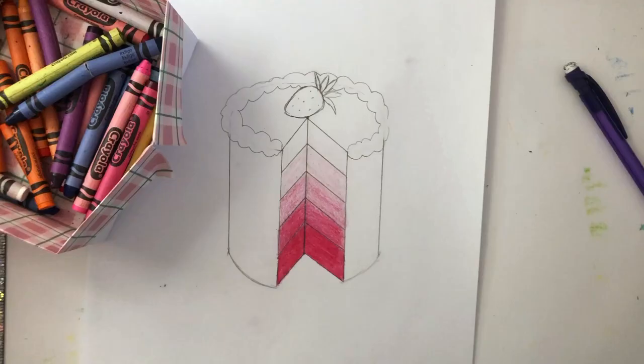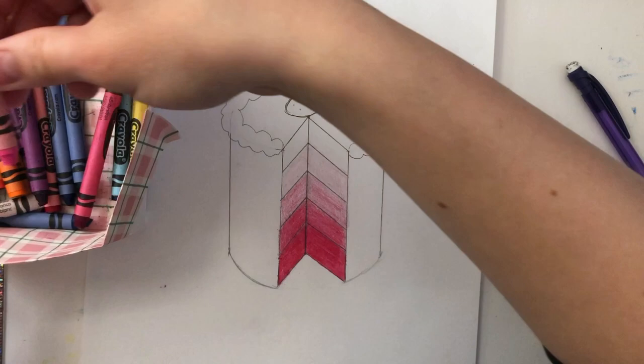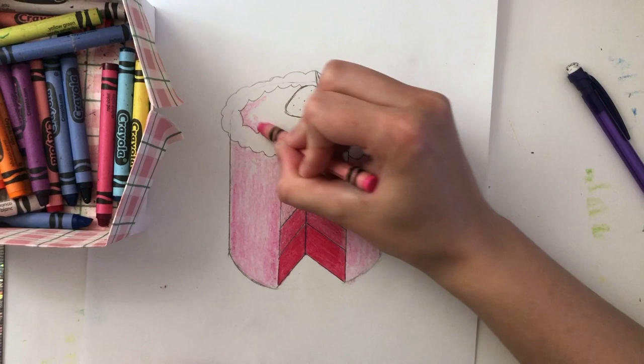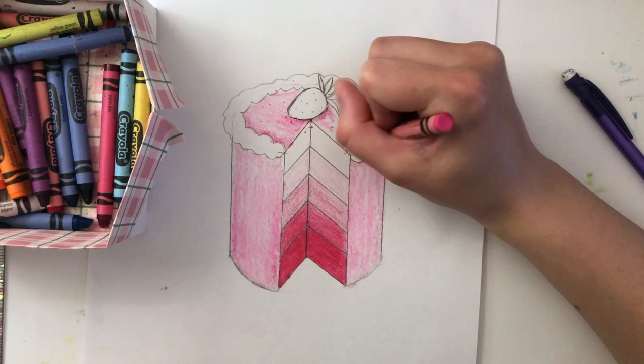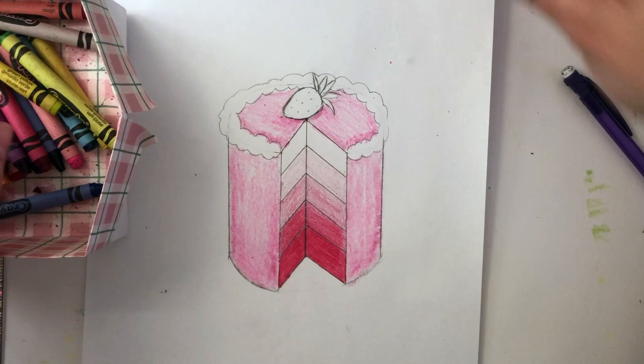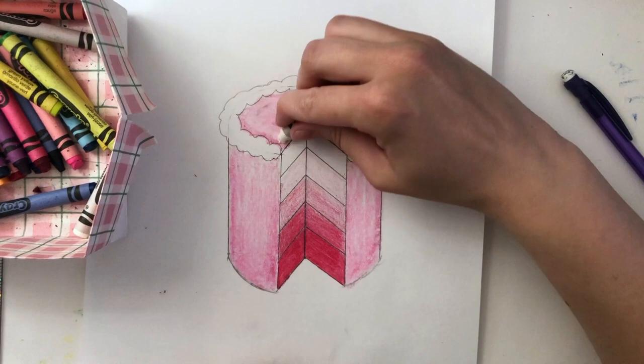I recommend using crayons or oil pastel, something that's going to give you a nice texture on your frosting. Something that will help your cake look even more realistic is adding some value to your frosting. So underneath your candles or any decoration or near the edges add a little bit of dark value. The other thing I recommend doing is taking your white crayon or oil pastel and going over the top. This will kind of blend everything together and smooth it out and really create that frosting-like texture.